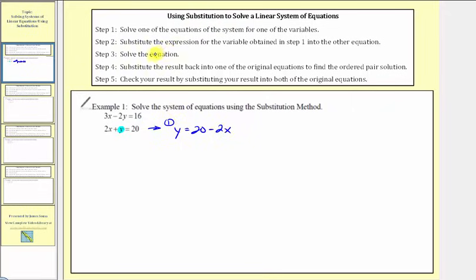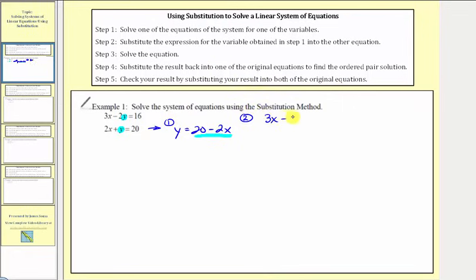Step 2: we want to substitute the expression for the variable obtained in step 1 into the other equation. Because we solved this equation for y and we know y equals 20 minus 2x, we'll substitute 20 minus 2x for y in the first equation. So for step 2, we would have 3x minus 2 times, not y, but 20 minus 2x, equals 16.